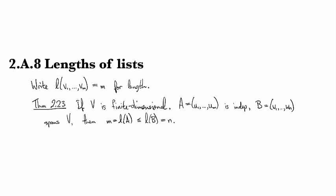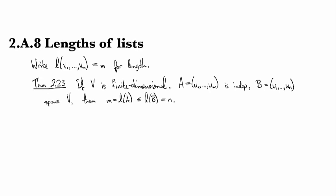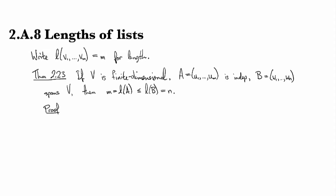So let's go ahead and prove this. We're going to do this by starting with B and swapping out with elements of A until we manage to prove our point. So we've got sort of a two-step process or a two-part step, which is repeated.